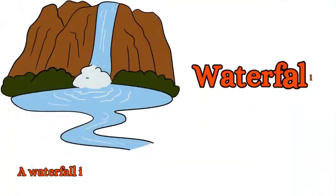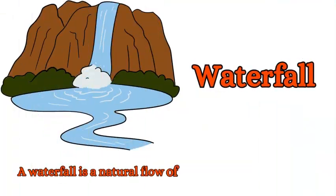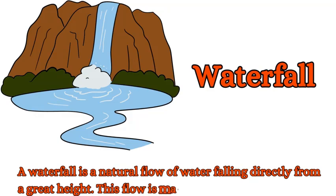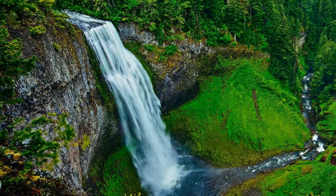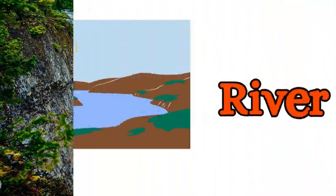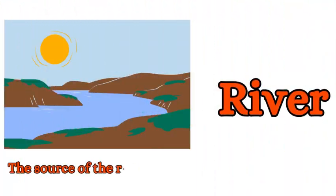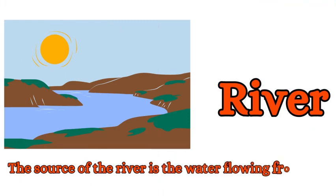Waterfall: a waterfall is a natural flow of water falling directly from a great height. This flow is mainly a river. River: the source of the river is the water flowing from the mountains.